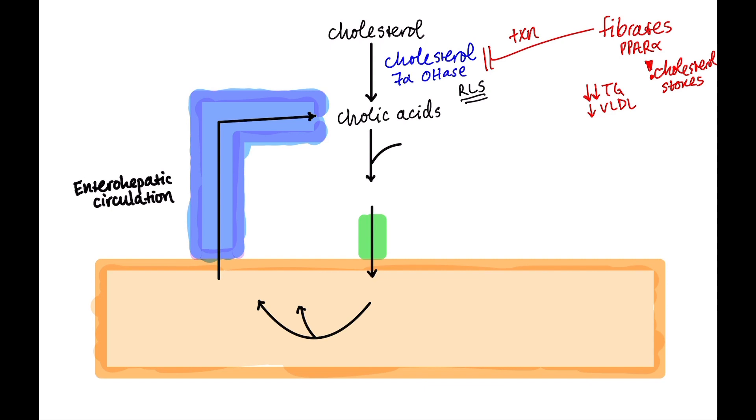What are some examples of fibrates? Gemfibrozil and fenofibrate. Those are the two you'll want to know for your exam. What next? Well, cholic acids are conjugated. Cholic acids are known as primary biliary acids. And they are conjugated with glycine and taurine, one or the other. And when that happens, they are now bile salts.